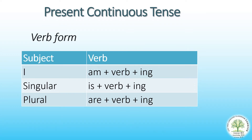For present continuous tense, if the subject is I, we use 'am' plus verb plus -ing. If the subject is singular, we use 'is' plus verb plus -ing.